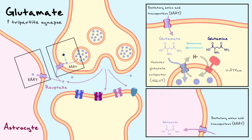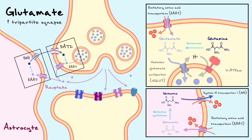These transporters co-transport glutamate with sodium. The glutamate transported into the astrocyte is converted back to glutamine by the enzyme glutamine synthetase. This glutamine is then transported out of the astrocyte by a transporter named the system N transporter 1, or SN1, which co-transports sodium as well. The glutamine extruded from the astrocyte can then enter the presynaptic terminal through the system A transporter, or SAT2, and be reconverted into glutamate by glutaminase. This final step ties in the reuptake process of glutamate.